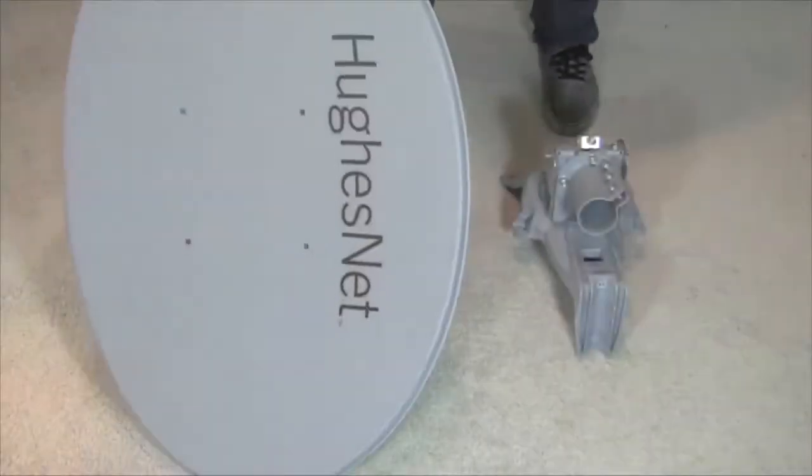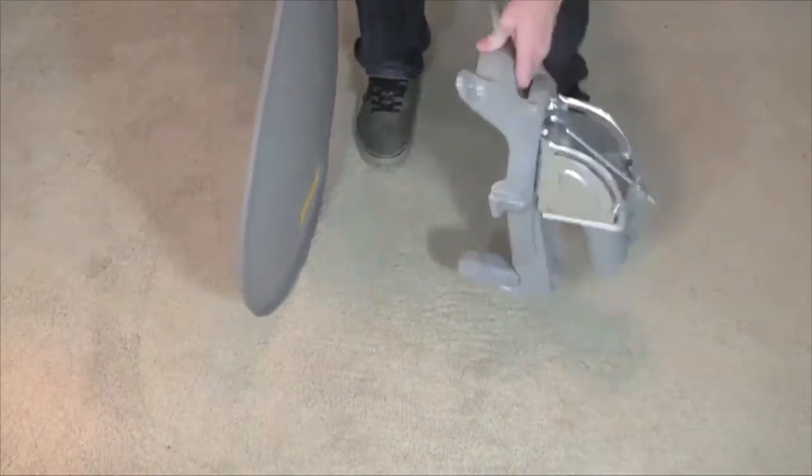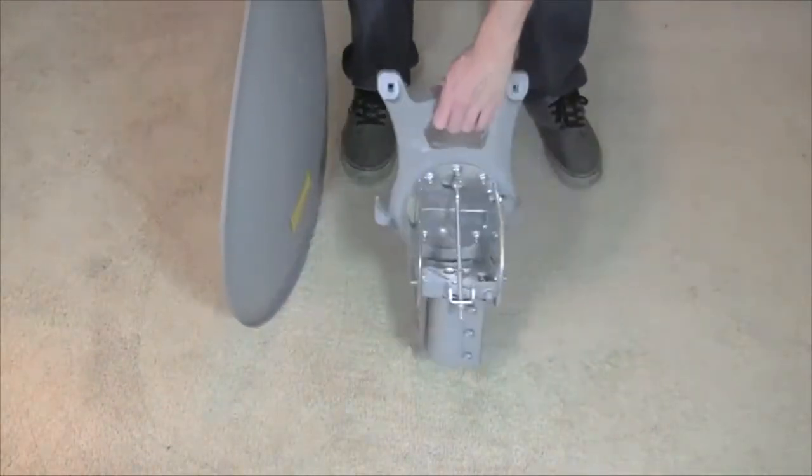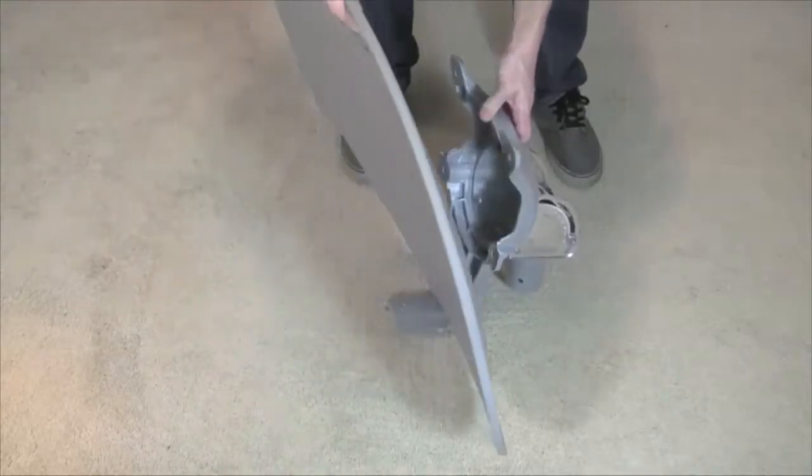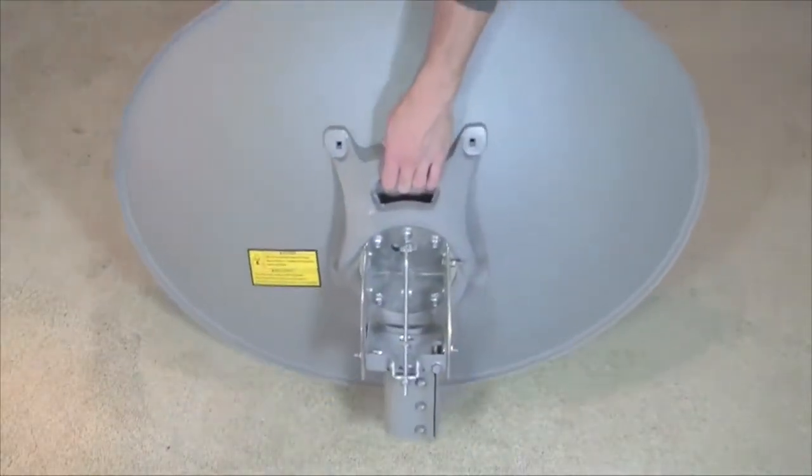For the next step, attach the 74 centimeter reflector to the reflector bracket. Place the reflector bracket behind the reflector and match up the holes.